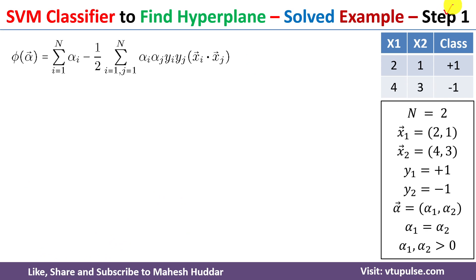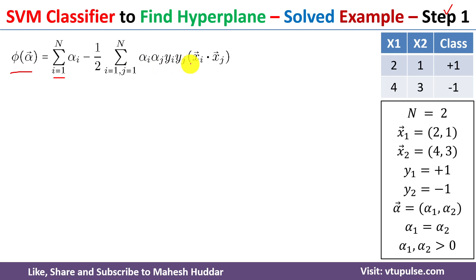In step 1 of the SVM algorithm, we need to find the values of alpha 1 and alpha 2. To calculate them, we use the equation: phi of alpha vector equals summation of alpha i, where i goes from 1 to n, minus 1 by 2 times the summation of alpha i, alpha j, yi, yj multiplied by xi vector dot product with xj vector, where i and j each go from 1 to n.